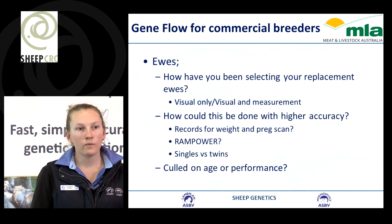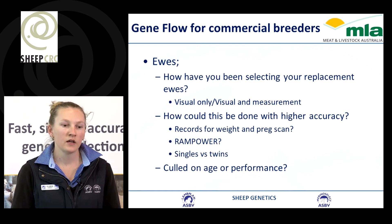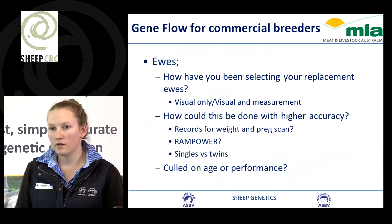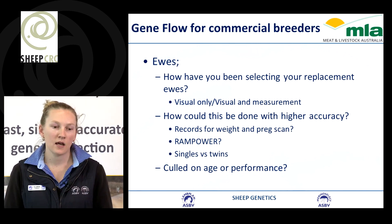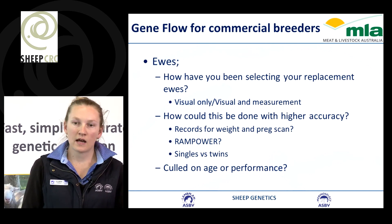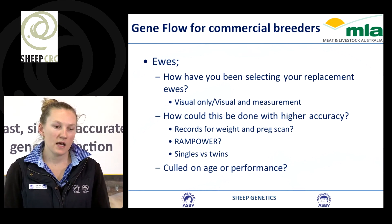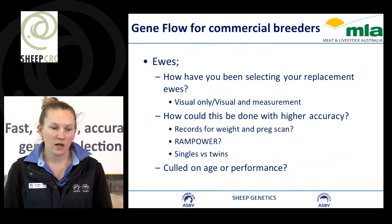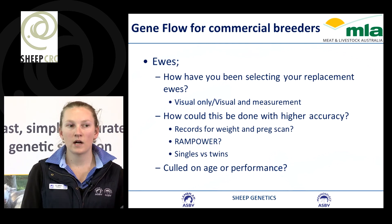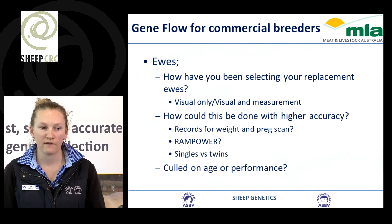Don't forget about the ewe portion either, because ewes still account for 50% of what we're passing on to our progeny. Consider how you're selecting replacement females — are you only doing it visually, or making more informed decisions based on records? In Merinos, we can do ram power runs. Are we culling based on age alone, or actually focusing on performance within the flock to make selection decisions on females?